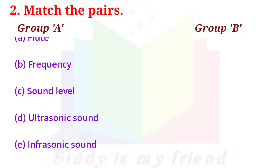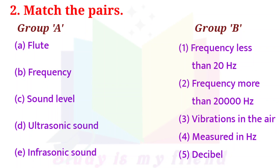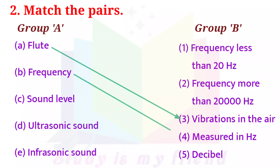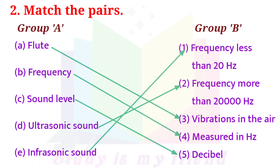Match the Pairs. Group A — Group B. A. Flute — Vibrations in the Air. B. Frequency — Measured in hertz. C. Sound Level — Decibel. D. Ultrasonic sound — Frequency more than 20,000 hertz. E. Infrasonic sound — Frequency less than 20 hertz.